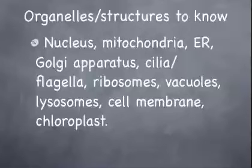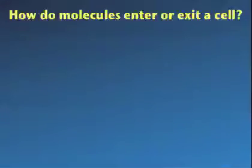The cell membrane protects the cell but also decides who enters and who exits. The chloroplast, only found in plants, is the site of photosynthesis. Now let's talk more about how stuff enters and exits the cell, because the organelle stuff you'll really learn when you do your project.